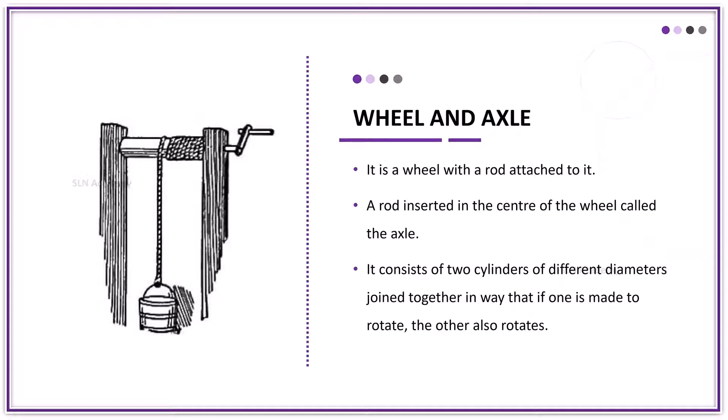A rolling pin, a steering wheel, a door knob, and a pencil sharpener are examples of wheel and axle.